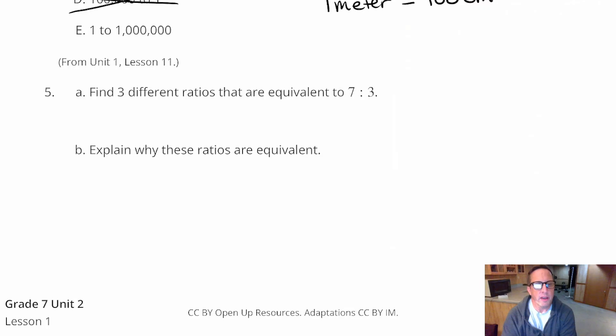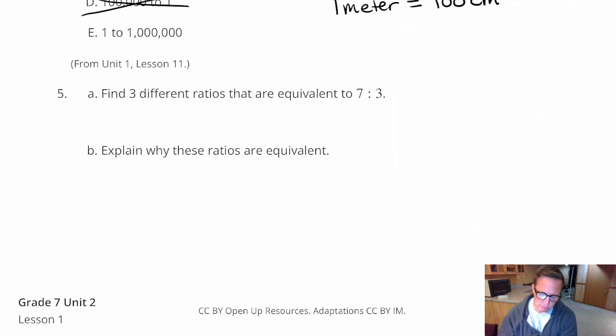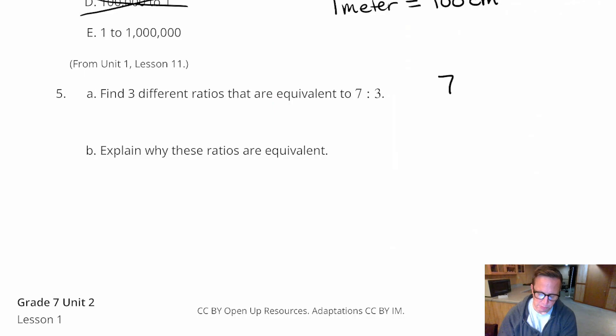For number five, it says, find three different ratios that are equivalent to seven to three. Okay? So, I'm just going to start with seven over three, or seven to three. Like this, the way it's written. And, let's say, just use a scale factor of two. So, seven times two, three times two. Seven times two is fourteen. Three times two is six.